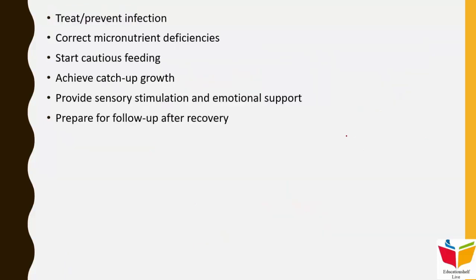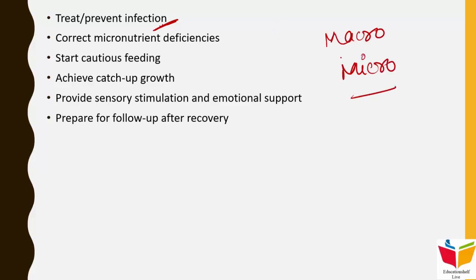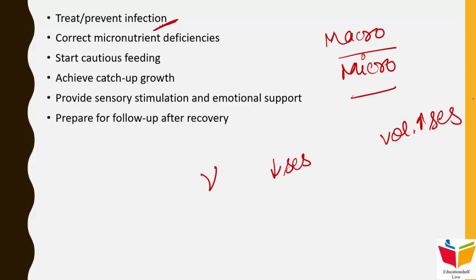The next principle is to treat or prevent infection — any type of infection should be treated, and if none is present, it must be prevented. We also learned about macronutrients and micronutrients; therefore the fifth principle is to correct micronutrient deficiencies.